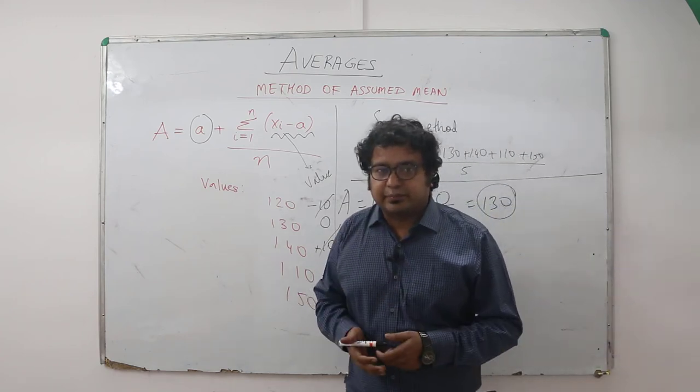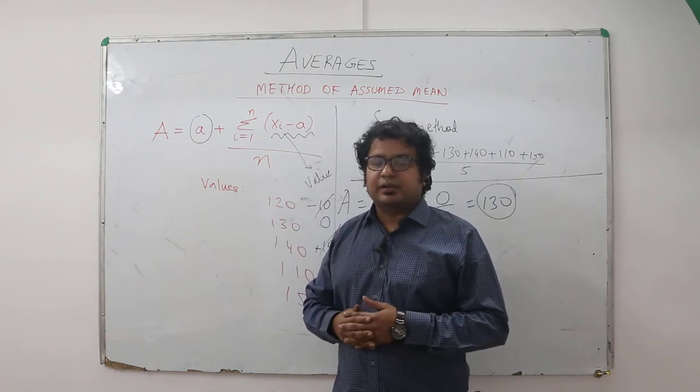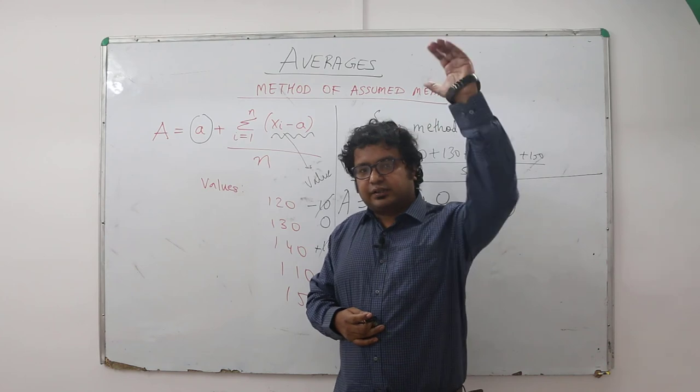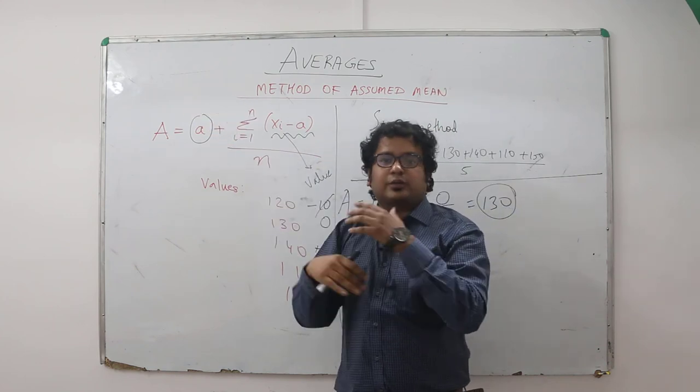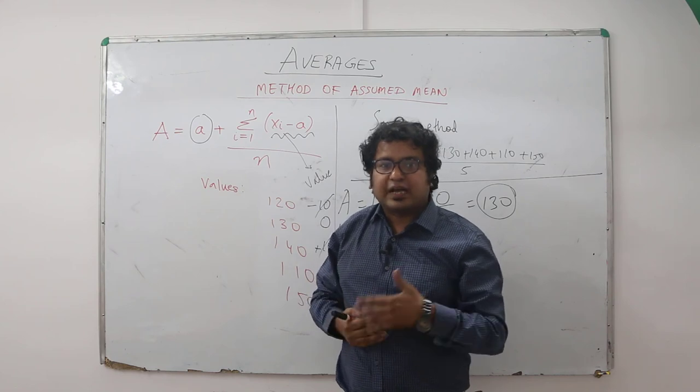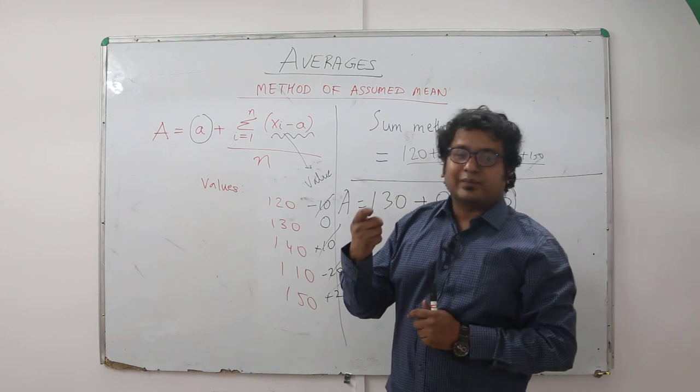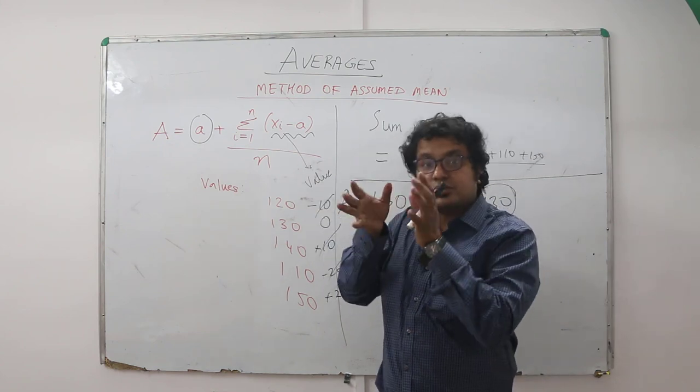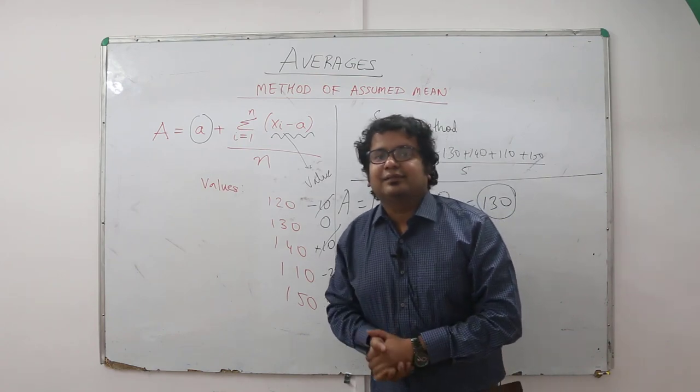Not just in quantitative ability, even in DI when you have large data sets - for example you have data given where 3 different cities and 12 months rainfall data is given, and you have to find some averages - this concept works. Because you take one value as the assumed value and make the others plus minus smaller values. You save time like this. I hope this is clear. Thank you.